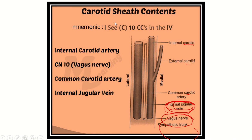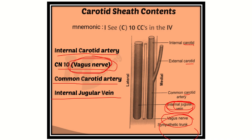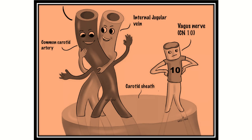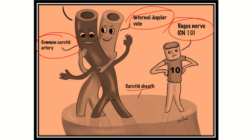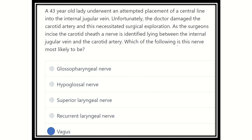The contents of the carotid sheath are: common carotid artery, internal jugular vein, and cranial nerve X, which is the vagus nerve. In this picture, the whole circular structure is the carotid sheath, and we can see the common carotid artery, the internal jugular vein, and the vagus nerve all present within it. So the vagus nerve is located within the carotid sheath, and during surgical exploration of the carotid artery, this nerve — the vagus nerve — is identified with the internal jugular vein and carotid artery.